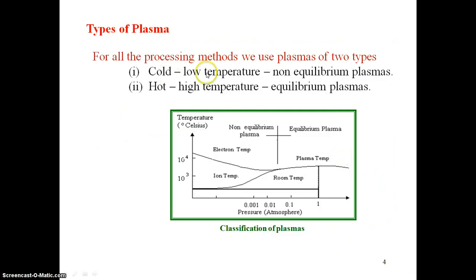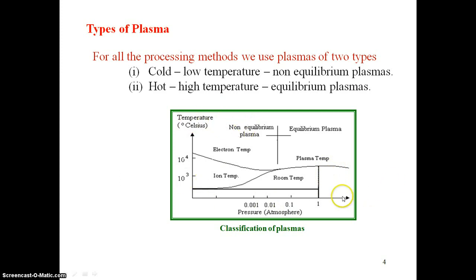Types of plasmas are cold plasmas and hot plasmas. Cold plasmas are non-equilibrium plasmas and hot plasmas are equilibrium plasmas. A conceptual diagram shows a temperature versus pressure curve illustrating the equilibrium and non-equilibrium plasma regions.